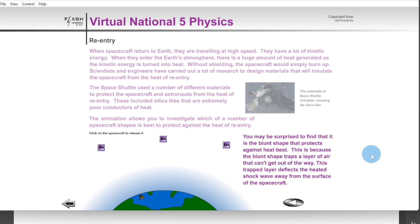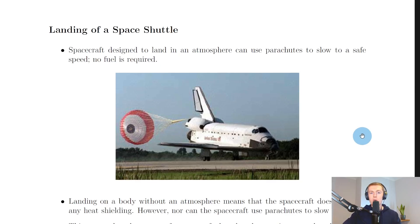This is because the blunt shape traps a layer of air that can't get out of the way. This trapped layer deflects the heated shock wave away from the surface of the spacecraft. So we're saying the best shape here was the blunt one on the left, the sort of rounded cone shape, and that's why this shape has been able to make it back to the Earth. Moving on, another risk of space exploration would be the landing of a space shuttle.